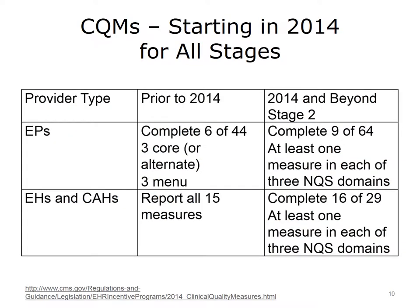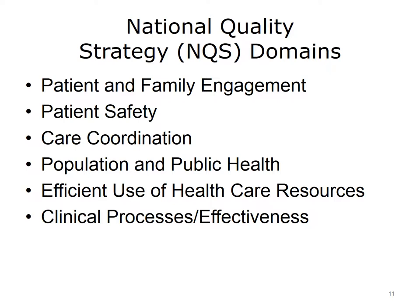Starting in 2014, the measurement of CQMs was expanded. No matter which stage of meaningful use one was in, eligible professionals and eligible hospitals were required to move to the 2014 CQMs. For eligible professionals, that required the use of 9 out of 64 measures, with at least one measure coming from each of three National Quality Strategy, or NQS, domains. Eligible hospitals and critical access hospitals now needed to complete 16 of the 29 measures, with at least one measure in each of the three NQS domains. The NQS domains are Patient and Family Engagement, Patient Safety, Care Coordination, Population and Health, Efficient Use of Healthcare Resources, and Clinical Processes/Effectiveness.